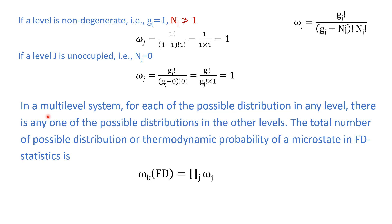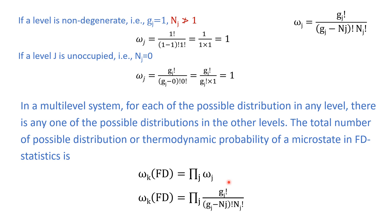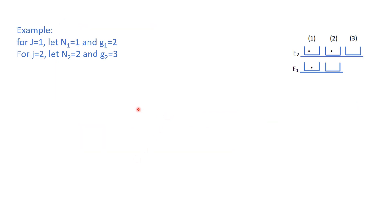If you have a multi-level system, then for each level there are different possible distributions for different energy levels. The thermodynamic probability of that multi-level system must equal the product of the thermodynamic probabilities of the individual levels. This pi notation represents the multiplication of all the thermodynamic probabilities of the energy levels. So the thermodynamic probability of a system obeying Fermi-Dirac statistics is given by this product relation.